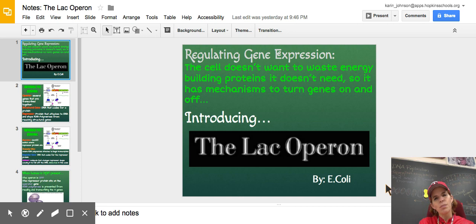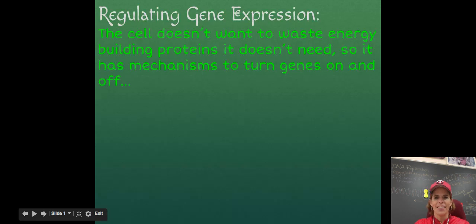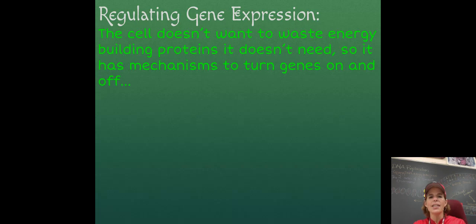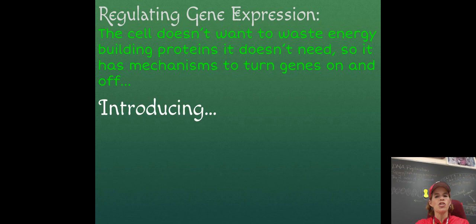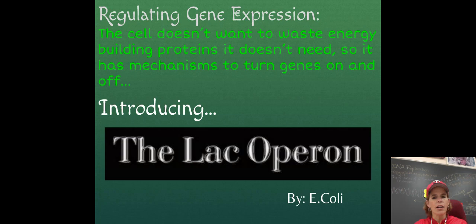We're going to give you an example of a really simple gene that's found in a bacteria called E. coli. The reason we use bacterial DNA is that it's a lot simpler than human DNA, and so it'll just give us the idea of how genes could be turned on or off. So we'll go ahead and start right here. The cell doesn't want to waste energy building proteins it doesn't need, so it has mechanisms to turn genes on and off. And the mechanism we're going to talk about is the lac operon.